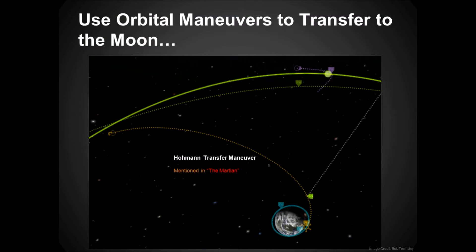You can perform orbital maneuvers. The movie The Martian actually mentioned this — this is the Hohmann transfer. I mentioned to my wife when we went and saw The Martian in the theater, they mentioned the Hohmann transfer, and I said to her, 'I did one of those this morning.' That's a great movie.